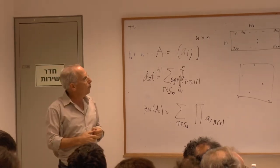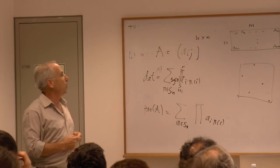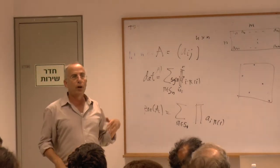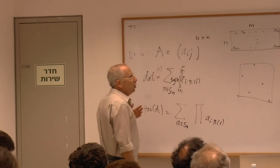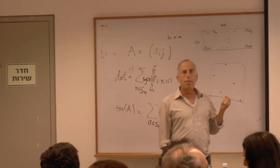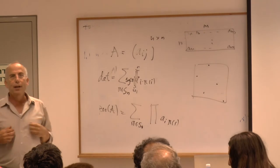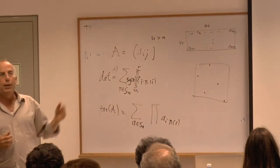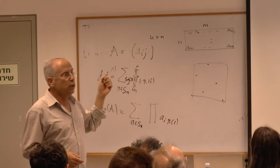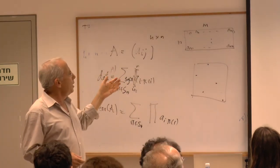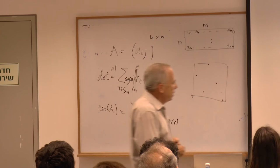Our theorem says the following. If t is a constant, then G can be approximated by a polynomial-time algorithm — not only by a polynomial-time algorithm, but by a bounded-depth polynomial-time circuit. After you introduce the noise, the noisy version of the function can be approximated by a bounded-depth polynomial-time circuit — a very low complexity class.